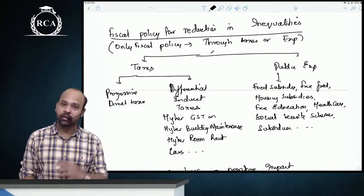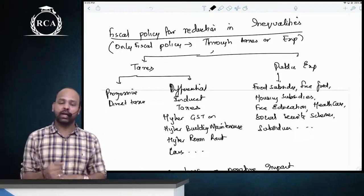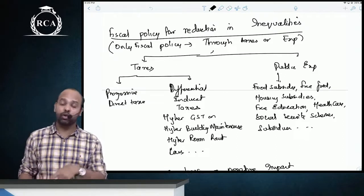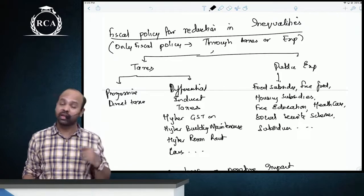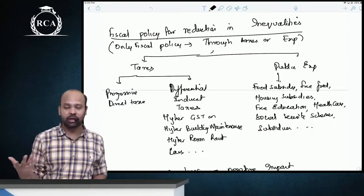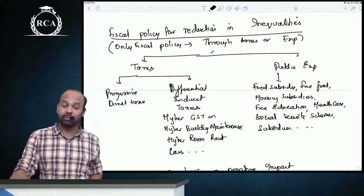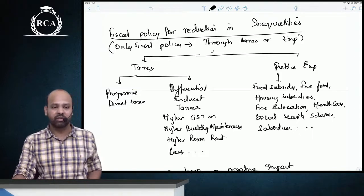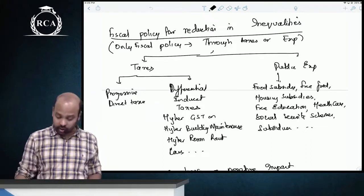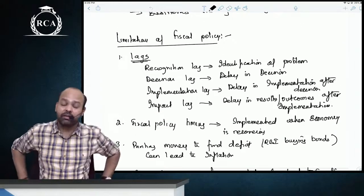Fiscal policy for reduction in inequalities can work through government subsidies, government expenditure, or taxes. Under taxes, a progressive direct tax system can be implemented, or differential indirect taxes can be applied — taxing luxury products at a higher rate. Government spending programs such as free education, free school medical facilities, subsidized education, free housing facilities, and education programs can all help reduce income inequalities.